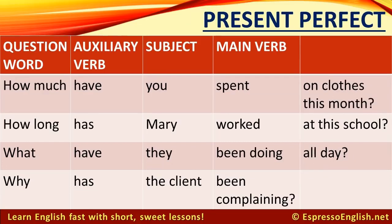Let's look at the present perfect. The auxiliary verb is 'have' or 'has,' and the main verb is the past participle form. For example: How much have you spent on clothes this month? How long has Mary worked at this school? This also works for the present perfect continuous, as in: What have they been doing all day? Why has the client been complaining?